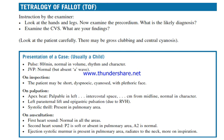Presentation of the case: usually a child. Pulse is 80 beats per minute, normal in volume, rhythm, and character. JVP normal but absent waveform. On inspection, the patient may be short and cyanosed with a plethoric face. On palpation, the apex beat is palpable in the left intercostal space, centimeters from midline, normal in character.